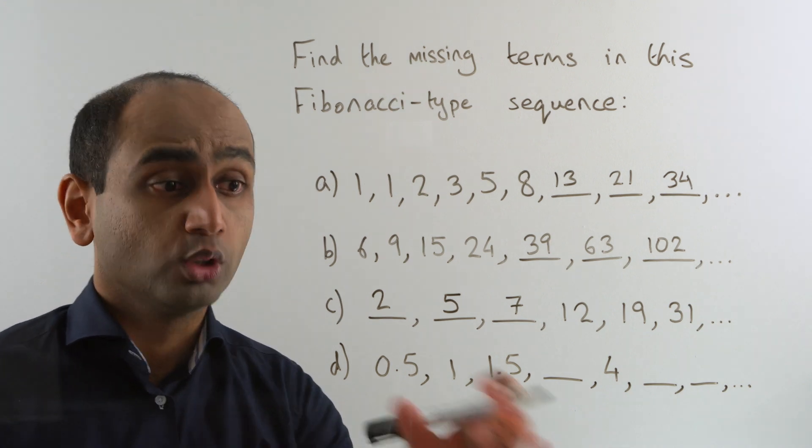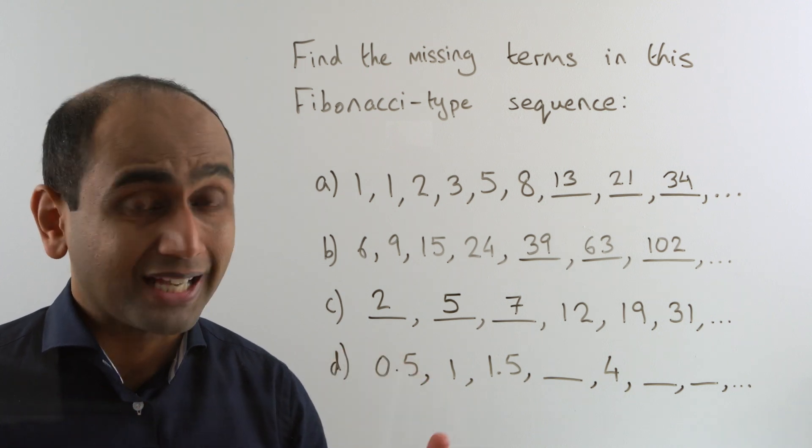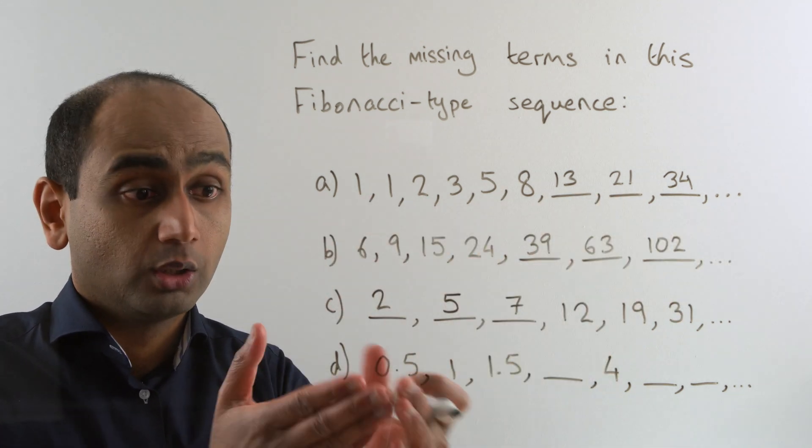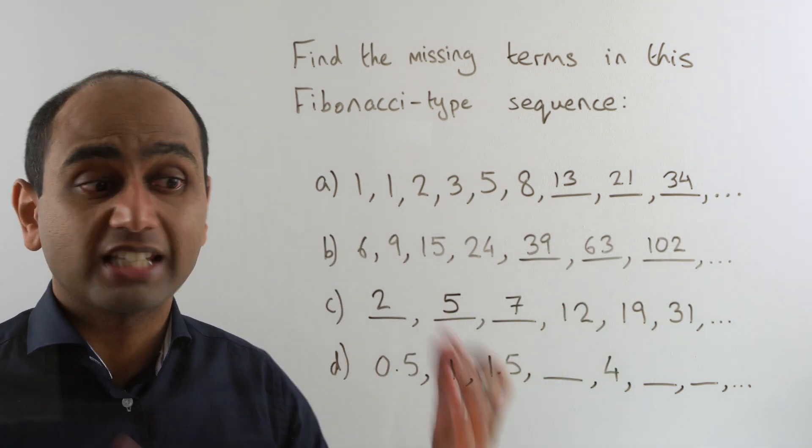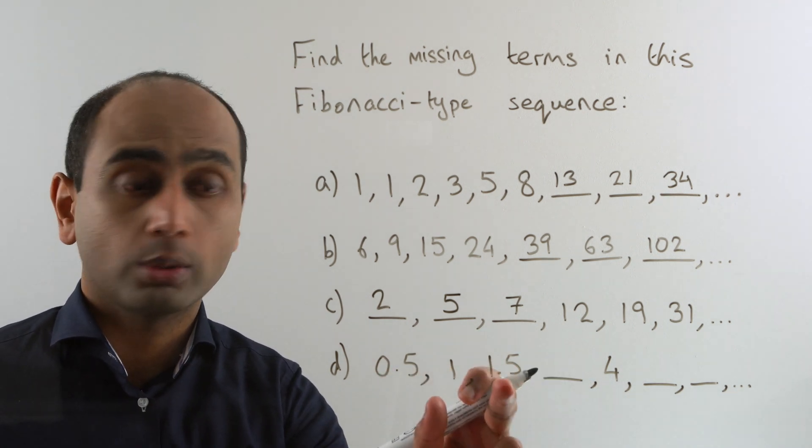Here's the next example. The point of this is really just to show you that Fibonacci type sequences don't have to involve whole numbers. Here we've got some with decimals but the same idea applies. 0.5 plus 1, that gives us 1.5.